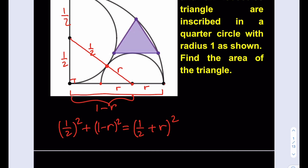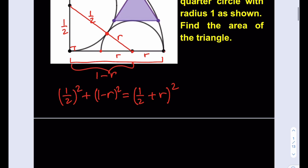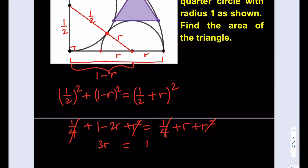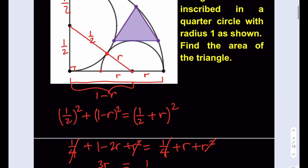Now we're going to find the radius of the smaller semicircle. Notice that even though it looks like one, it's not an equilateral triangle — it is just an isosceles triangle. Expanding the equation: 1/4 + 1 − 2R + R² = 1/4 + R + R². R² cancels out, 1/4 cancels out. Putting the R's on the same side gives 3R = 1, so R = 1/3. The radius of the smaller semicircle is 1/3 and the larger one is 1/2.